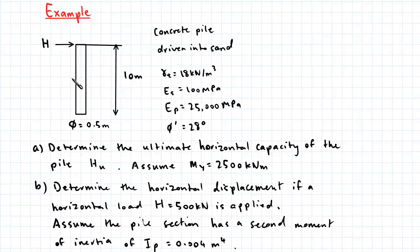So here we have a concrete pile which has been driven into sand and there's a horizontal load applied to the top of the pile. The pile is 10 meters long and has a diameter of 0.5 meters and the properties of the soil and pile are given here.